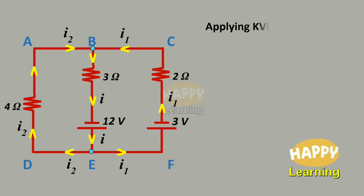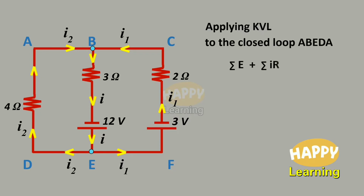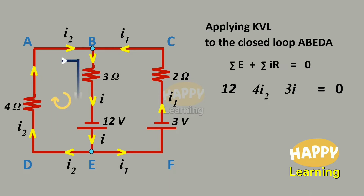Applying KVL to the closed loop A, B, E, D, A — the general form of KVL is sigma E plus sigma IR equals 0. Here we have only one battery of 12 volts and two resistors, and the potential drops are 4I2 and 3I. Now we need to assign signs to these potentials. For that, let us take a reference direction — I am taking clockwise direction.